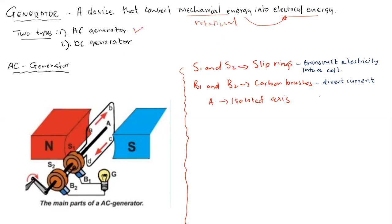There are two types of generators: the AC generator and the DC generator. An AC generator is an alternating current generator — the current it produces changes direction. A DC generator is a direct current generator — the current induced moves in the same direction, in one direction only.